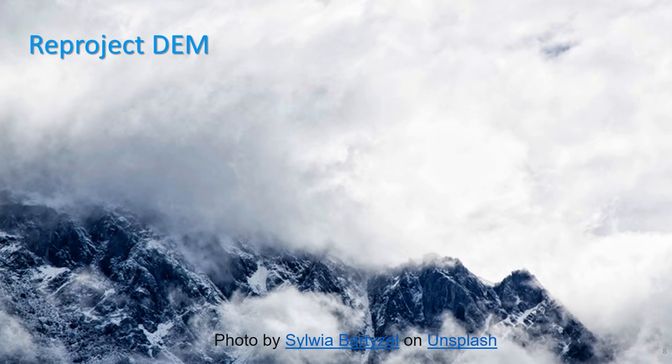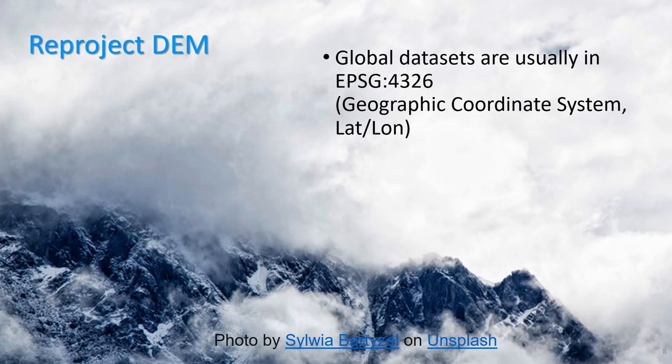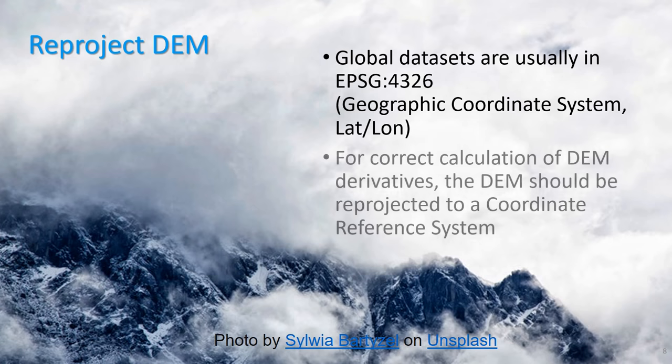The next step is to reproject the DEM. This is necessary because the global datasets are usually in the geographic coordinate system — latitude, longitude — and the units are in degrees. For DEM analysis, we need to use a metric projection, so we need to reproject to another coordinate system.